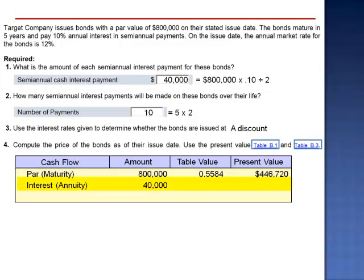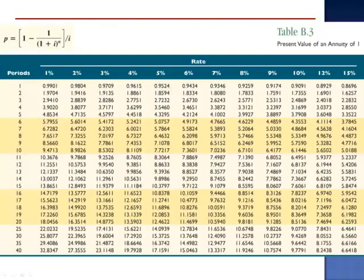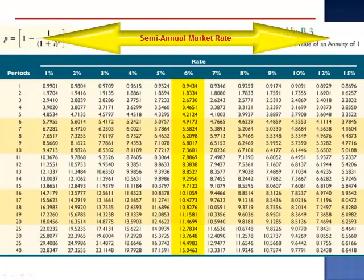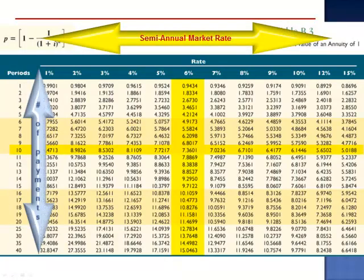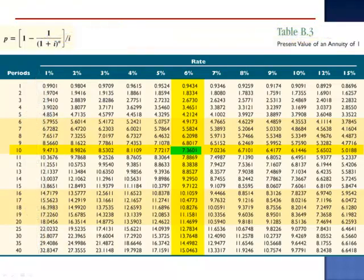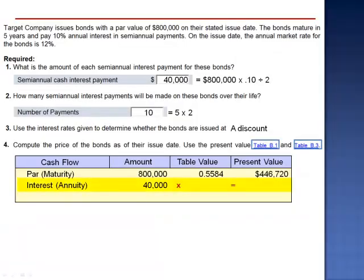To calculate the present value of our series of cash flows, the annuity, we go to the present value of an ordinary annuity table and we look up the same factors. We go to the intersection of the semi-annual market rate, 6%, and n equals 10, 7.3601. This factor can be viewed as the number of equivalent payments. Even though we're going to be making 10 payments of $40,000, in today's purchasing power, it's the equivalent of making 7.3601 payments of $40,000. 10 payments of $40,000 spread out over time is the equivalent of 7.3601 payments of $40,000 today. The present value is $294,404.